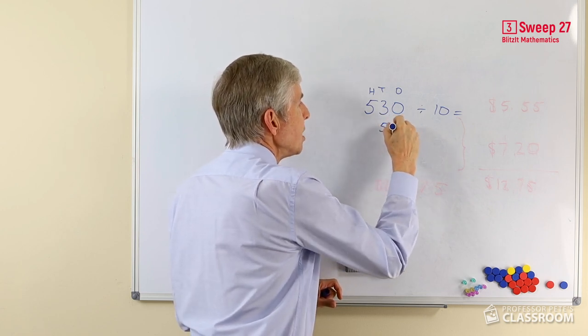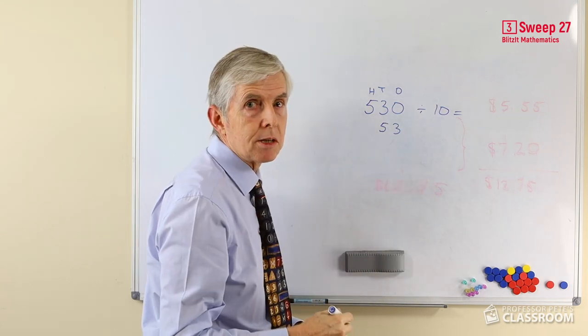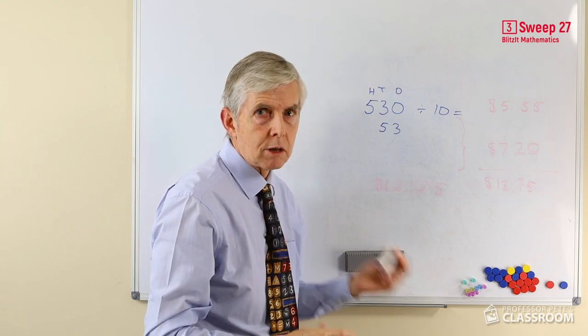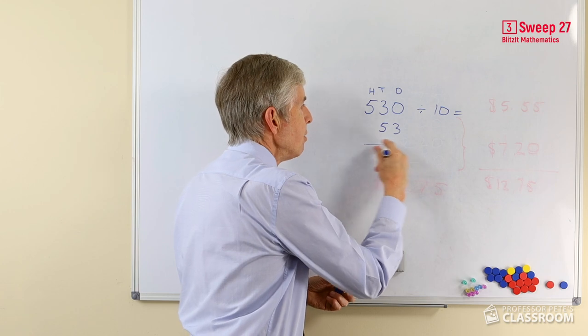Three tens will become 3 ones. There's no need to do anything else. The zero simply evaporates—there's nothing there. We're certainly not going to add a decimal point. The answer is simply 53.